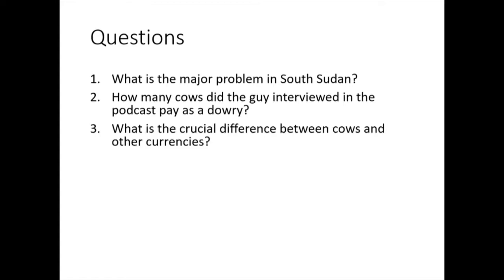What is the crucial difference between cows and other currencies? You can put different markings on them to identify ownership — interesting. Also, instead of killing the cows, they use just the blood and the milk. It's kind of like living off the interest on your savings — you can have the milk and the blood. So cows are physical objects with non-monetary utilities.